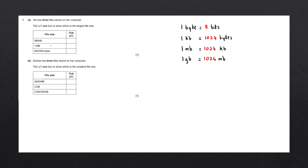We want to now take our file sizes and convert them into a single memory size to figure out which one is the largest out of these three. Starting off with the first one, we can already see that 999 kilobytes is less than one megabyte, since a megabyte is equivalent to 1024 kilobytes. Let's write that down over here.